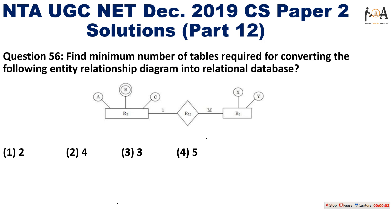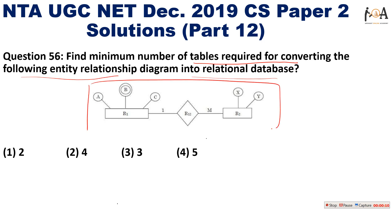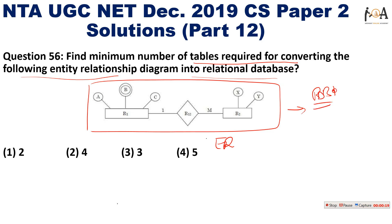Find the minimum number of tables required for converting the following entity relationship diagram into a relational database. An ER diagram is given to us and we need to convert it into a relational database. The question is: how many tables will be required to convert this ER diagram into a relational database?